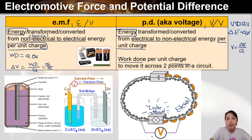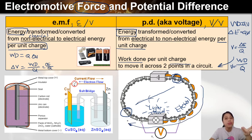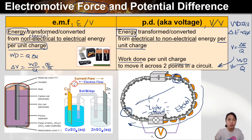Potential difference is work done per unit charge to move across two points in the circuit. You need some energy to move charge from here to here. What causes this energy to appear in the first place is the battery. So make sure you know the difference between these two — there are some practice questions to help you think about it.